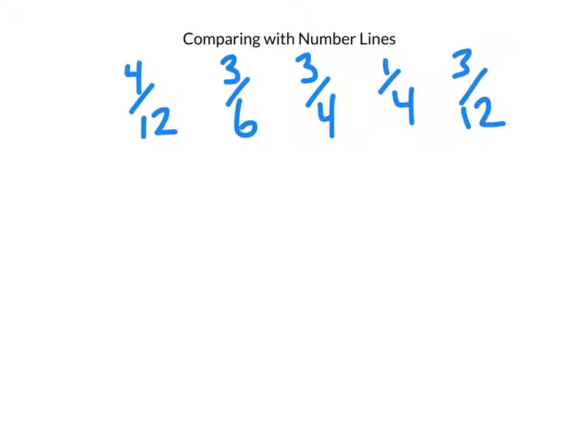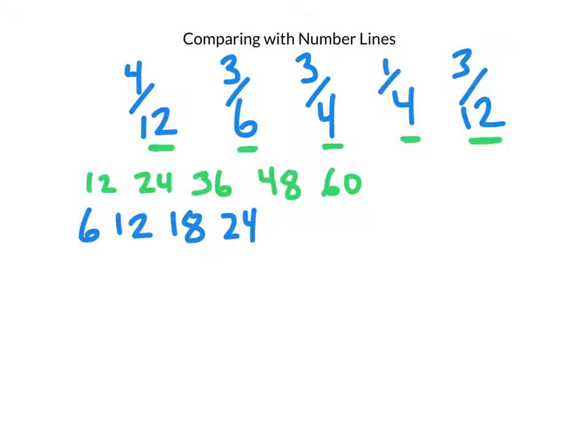Well this is what we have to do. We have to start off by looking at our denominators and thinking what's a number that all denominators share? Well, I'll start with the 12 and I'll count by 12s: 12, 24, 36, 48, 60. Now I'll count by 6s because I have a denominator of 6: 6, 12, 18, 24, 30.